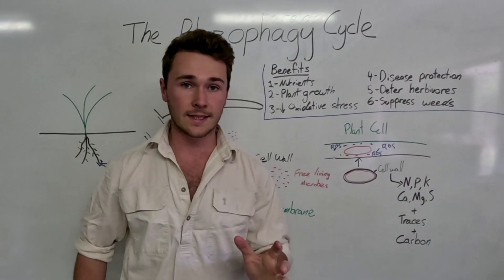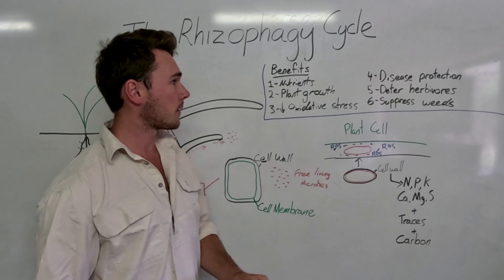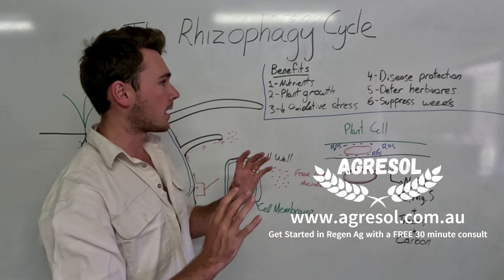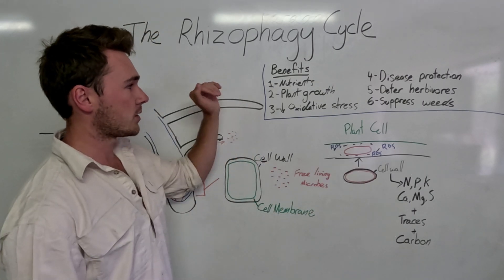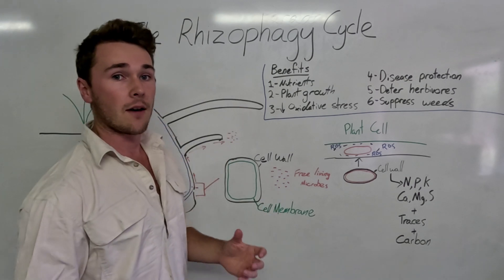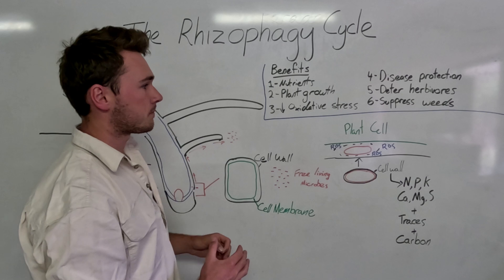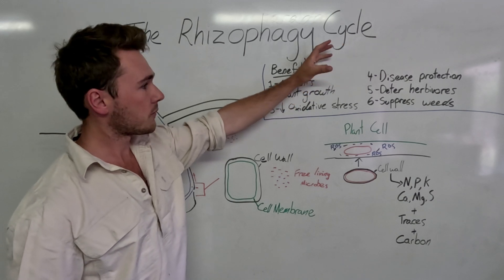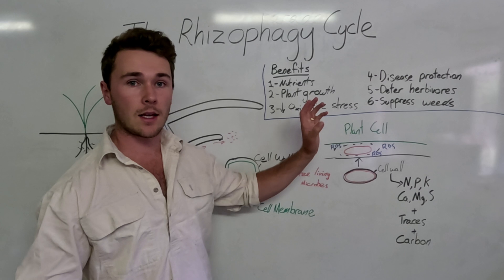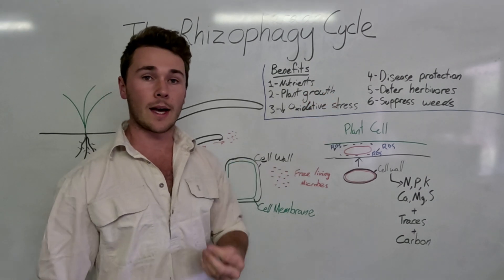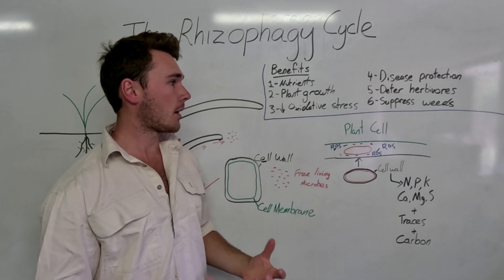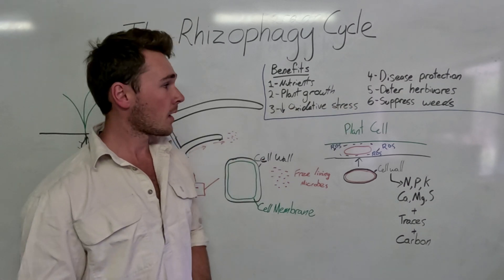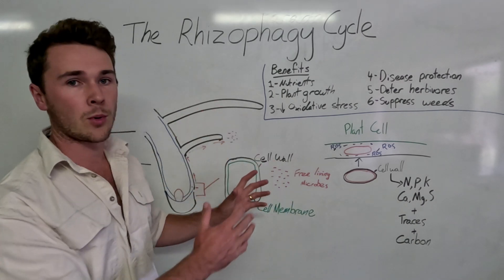The reason why it's very important for all of us to understand this process is that we get six main benefits from it. The first is that we increase nutrient acquisition for our plants. We also get plant growth, reduced oxidative stress — very important in stressful environments, so effectively all environments. We get a disease protection factor as well as protection from herbivores, mainly insects. And finally, suppression of weeds.